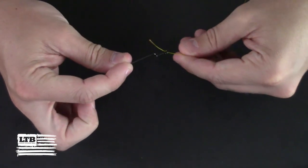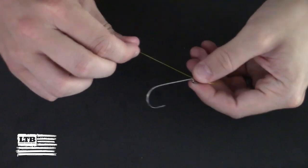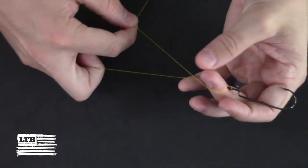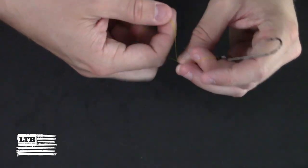First we take our line and we feed it through the eye of our hook. The most typical knot is a four turn clinch knot, so we're going to take our tag end and wrap it around our main body four times.